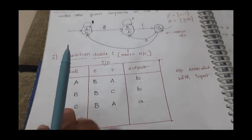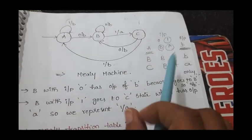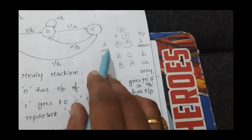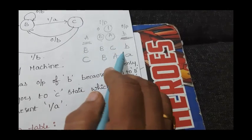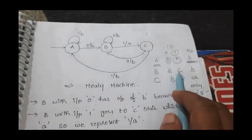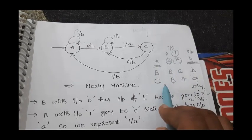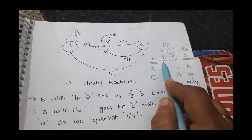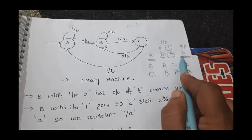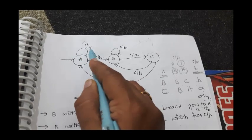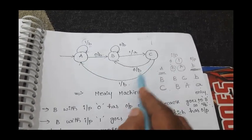Now let us convert this Moore machine into a Mealy machine. The same transition table has been rewritten here: state a has output 'b', state b has output 'b', state c has output 'a'. For state a, upon input 0 it goes to b — but the a state output is always 'b' only. Whether the input is 0 or 1, state a's output is always 'b'.